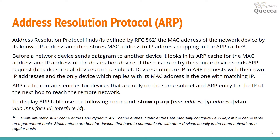To display the ARP table, use the command: show ip arp, with several options to filter the output. The main ones are: MAC address to filter by MAC, IP address to filter by IP, VLAN with a VLAN interface ID, SVI interface when using SVI interfaces, and also filter by interface ID.